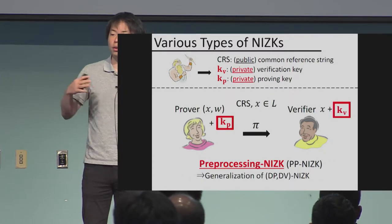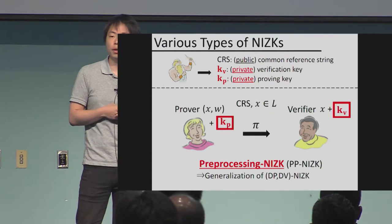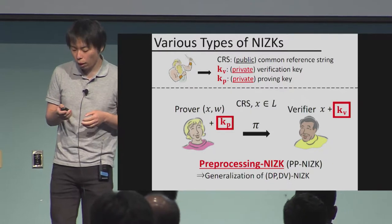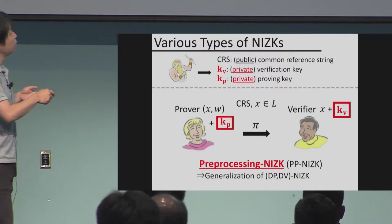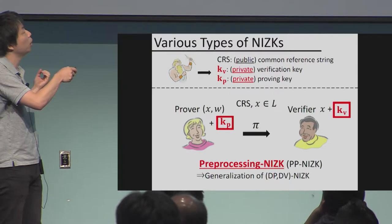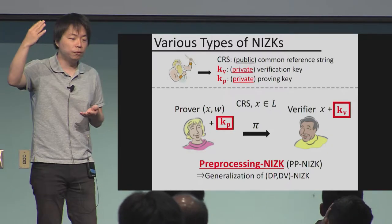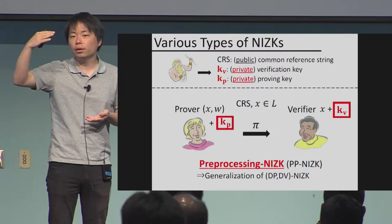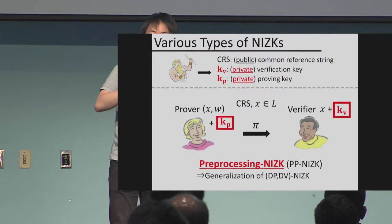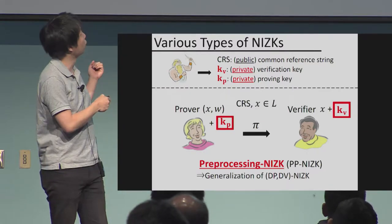You can also consider the opposite flavor — a private proving key setting, called the designated prover NIZK. And finally, you can consider a relaxation where both the prover and the verifier have private information, called a preprocessing NIZK. If you're in the preprocessing NIZK and find a way to make the verification key public, you get a DV NIZK. And from a DV NIZK, if you get rid of the verifier's secret information, you get a CRS NIZK.